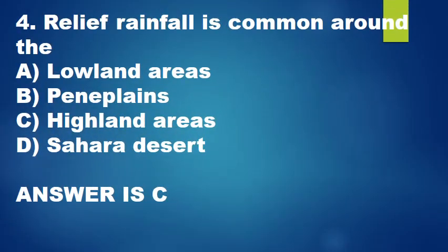Question 4: Relief rainfall is common around the: A. Lowland areas, B. Pina Plains, C. Highland areas, D. Sahara Desert. The answer is C.